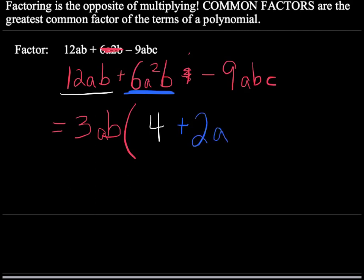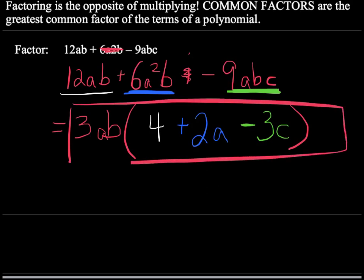And 2a times 3ab will in fact give you 6a squared b. The last one, negative 9abc divided by 3ab will give you negative 3c. Okay, and I'm done. So there's my factored form.